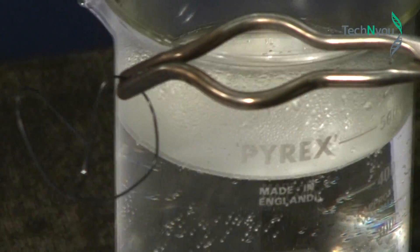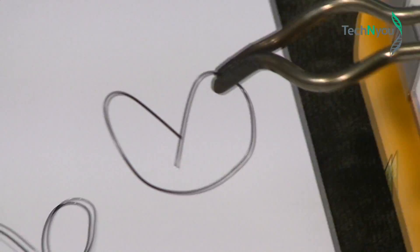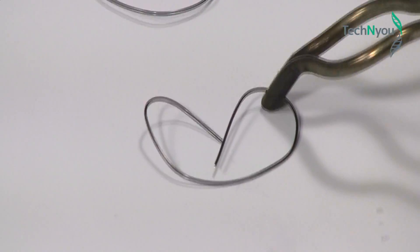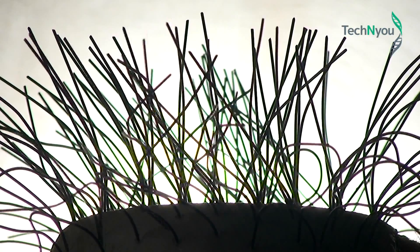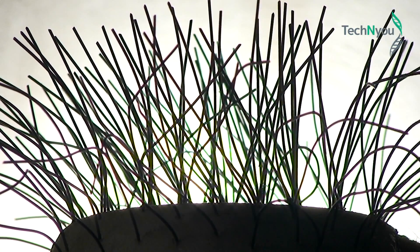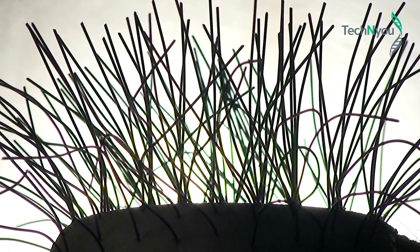Nitinol is an alloy made of nickel and titanium with a capacity to change shape and then change back again. This shape changing behavior sets it in a special class of man-made materials known as shape memory alloys.